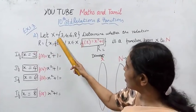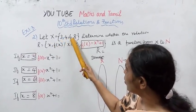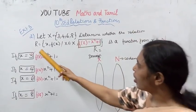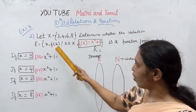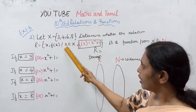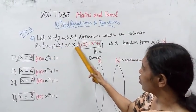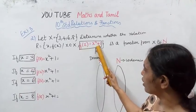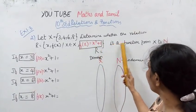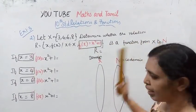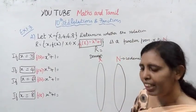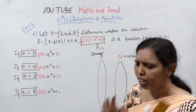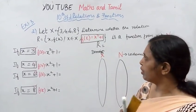Let X = {3, 4, 6, 8}. Determine whether the relation R = {(x, f(x)) | x belongs to X, f(x) = x² + 1} is a function from X to N. Write it up. This is a function from X to N.